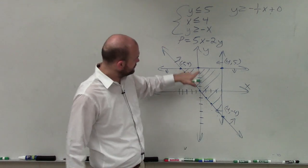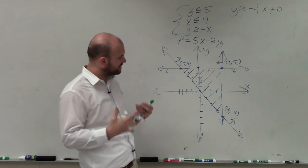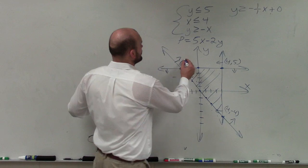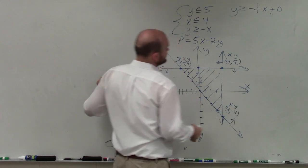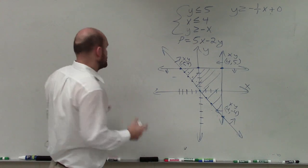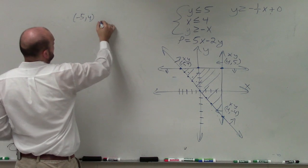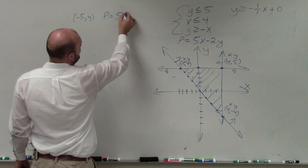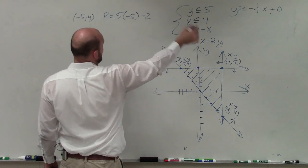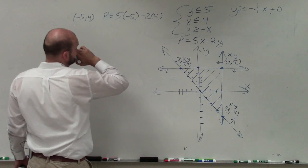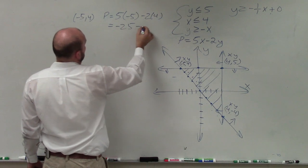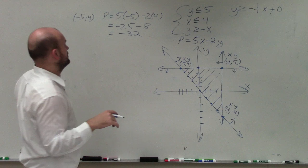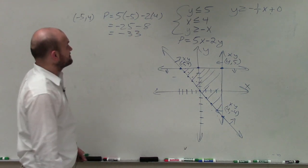Those are going to be my vertices — only the values where our constraints meet. Now what we want to do is optimize our objective function. We're going to plug in our x and y coordinates for each vertex and determine which gives us the largest value. For the first one, negative 5 comma 4: p is equal to 5 times negative 5 minus 2 times 4, which gives negative 25 minus 8, which equals negative 33. So that's obviously not going to work.